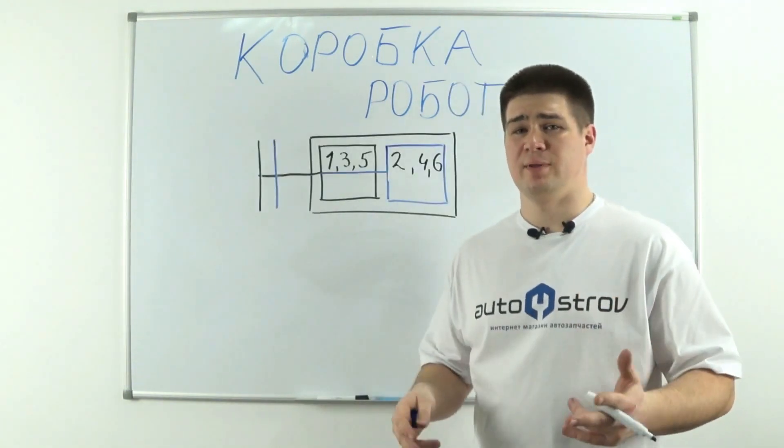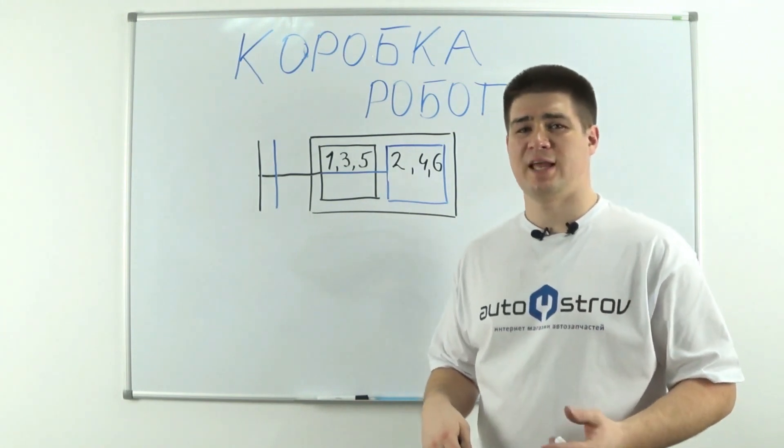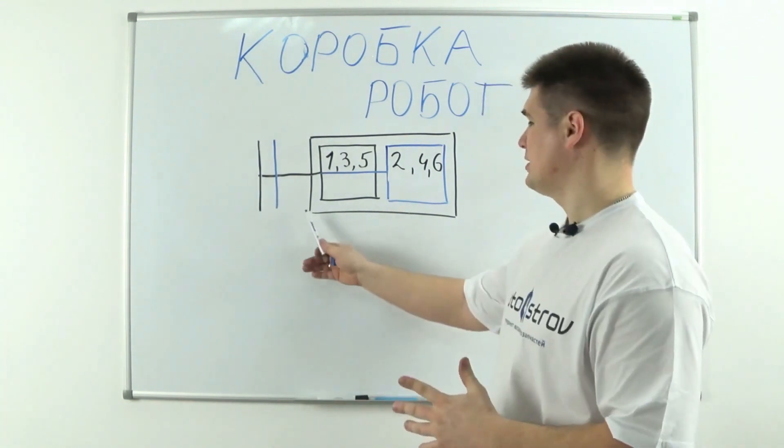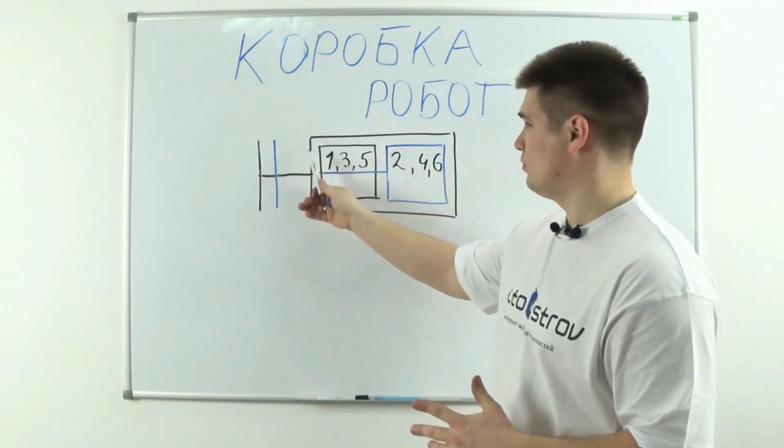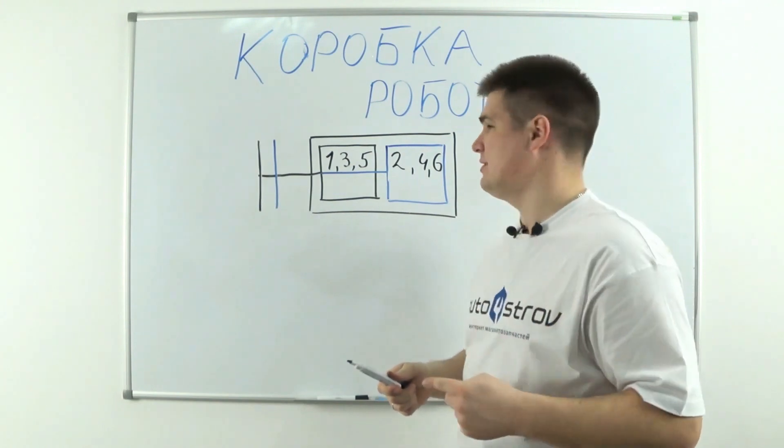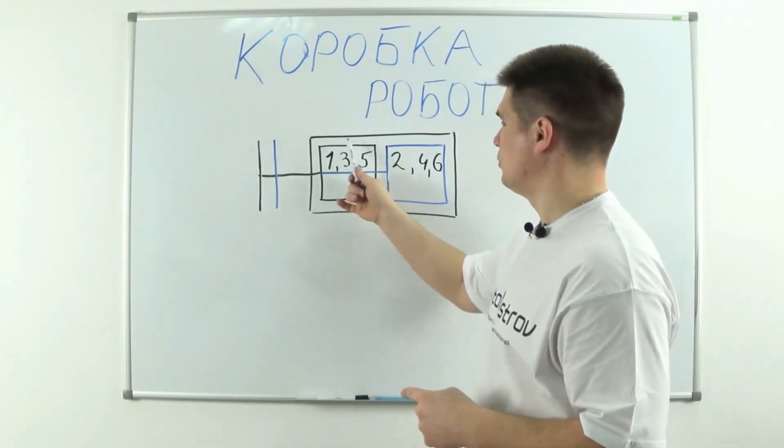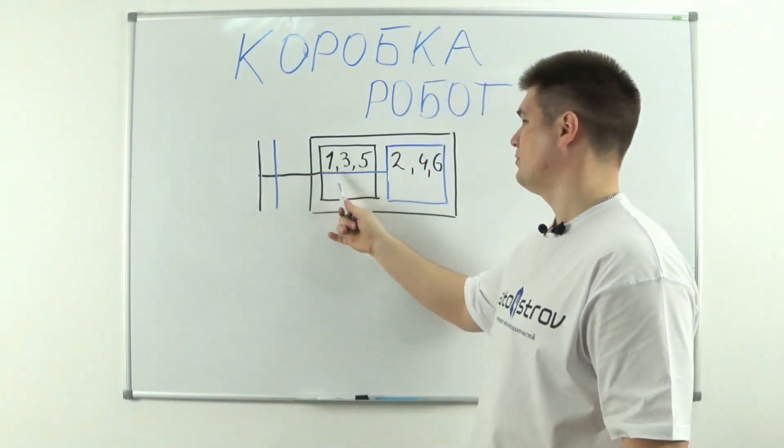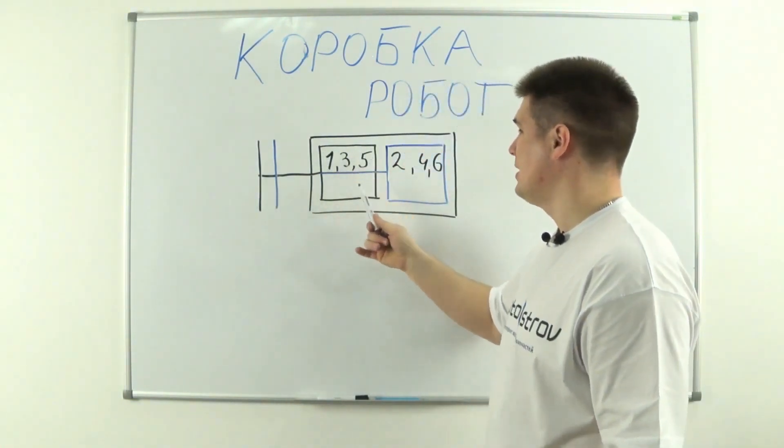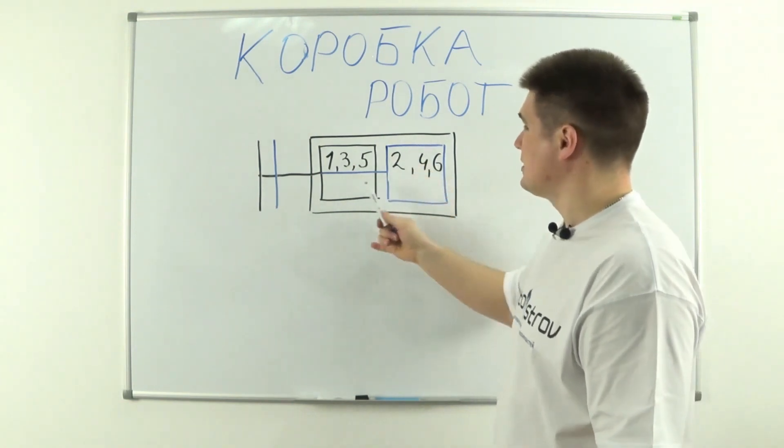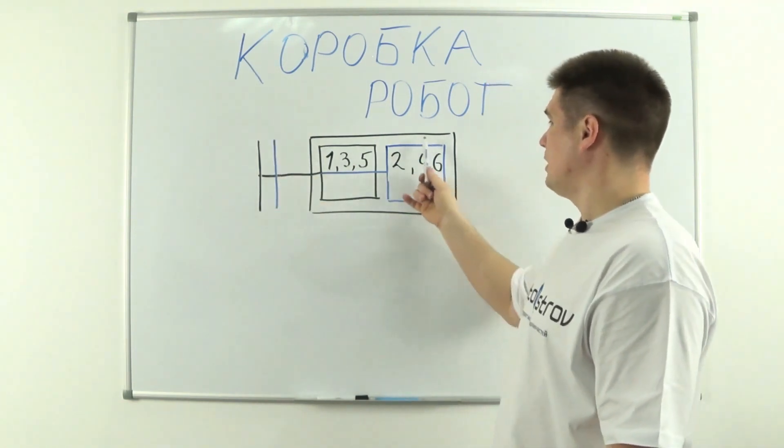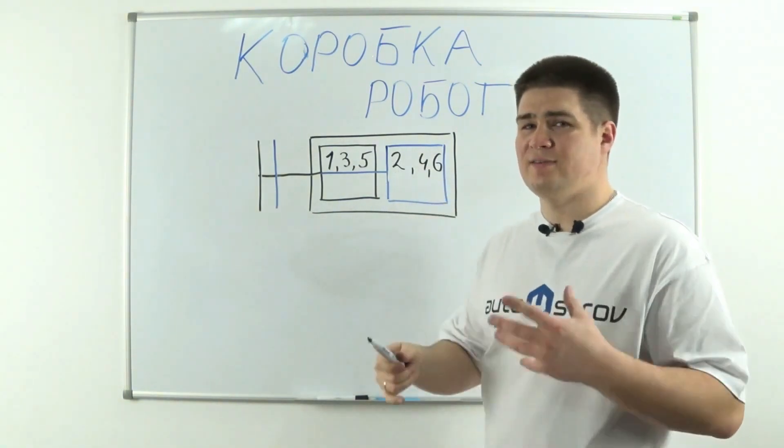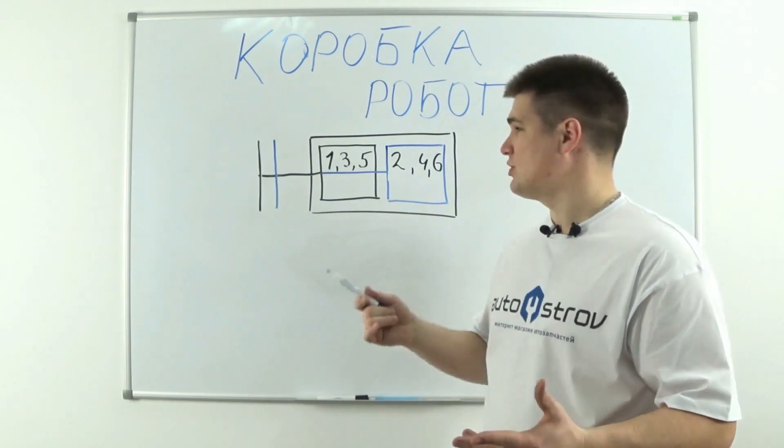A DSG box with two clutches can be roughly represented as consisting of two separate boxes, each with its own clutch. On the board, I have a box body in which there are two independent gearboxes. Here is the first gearbox with its own black clutch. This gearbox is responsible for odd gears. And the second gearbox is blue with its own clutch, which is responsible for even gears. These internal gearboxes exist independently of each other, and each has its own clutch.